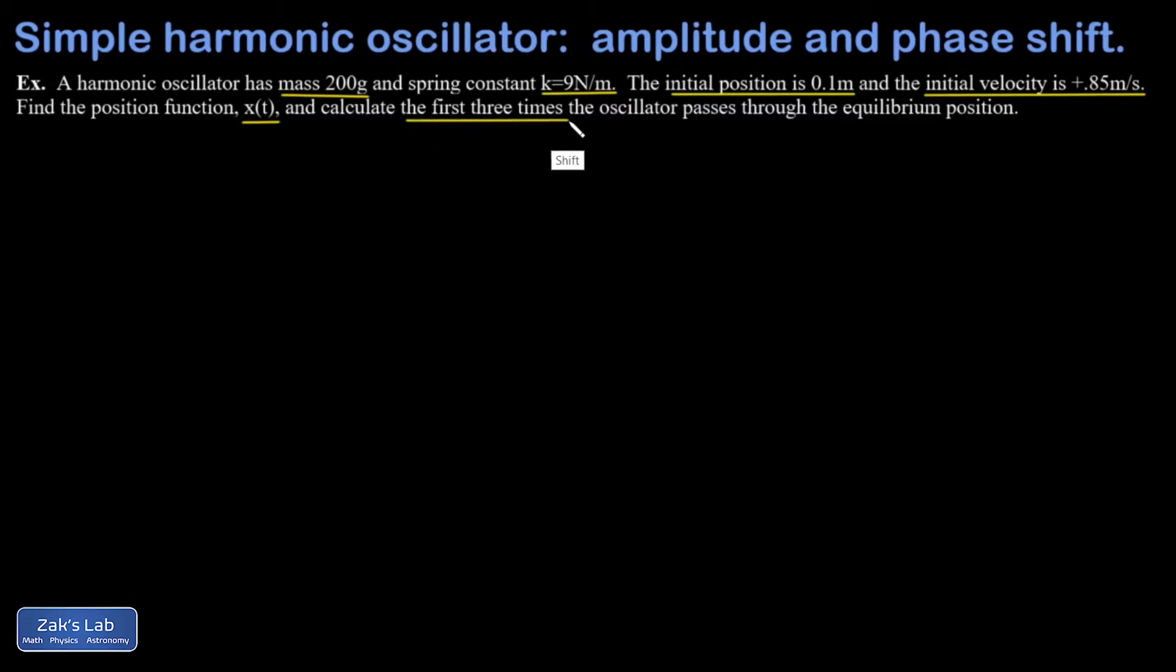My goal is to find the position function, and then here's the tricky part. Give me the first three times the oscillator passes through the equilibrium position. This is a case where it really helps a lot to have your general solution simplified into a single trig function.